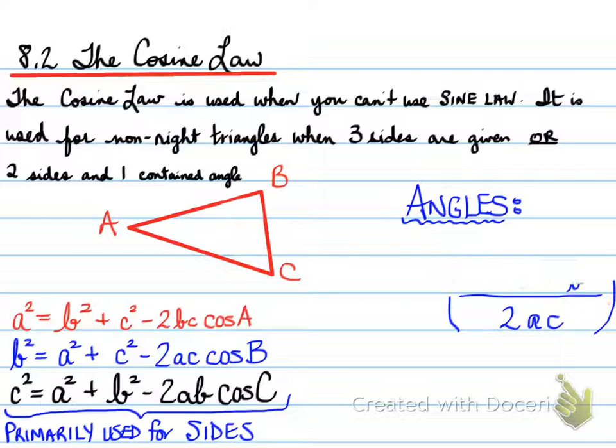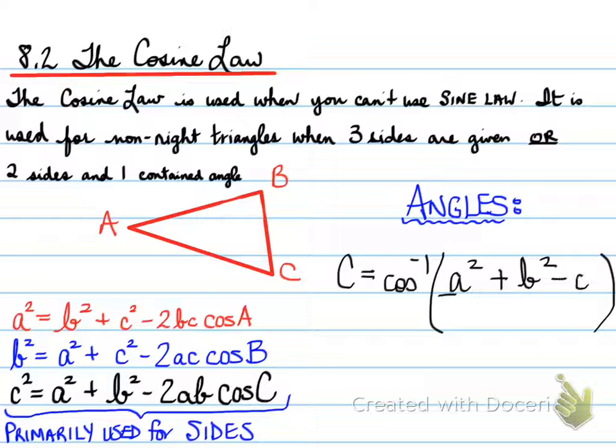Now, finally, let's say we're looking for angle C. What would it look like? Well, angle C equals cos inverse of A squared plus B squared minus C squared all over 2AB.